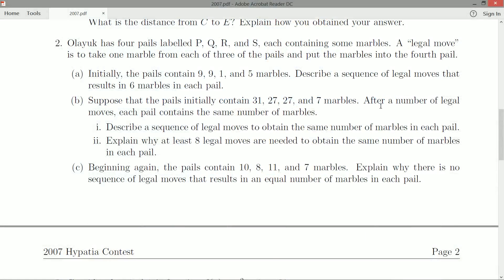Okay, so B part. Suppose that the pails initially contain 31, 27, 27, and 7 marbles. After a number of legal moves, each pail contains the same number of marbles. Describe a sequence of legal moves to obtain the same number of marbles in each pail. Explain why at least 8 legal moves are needed.